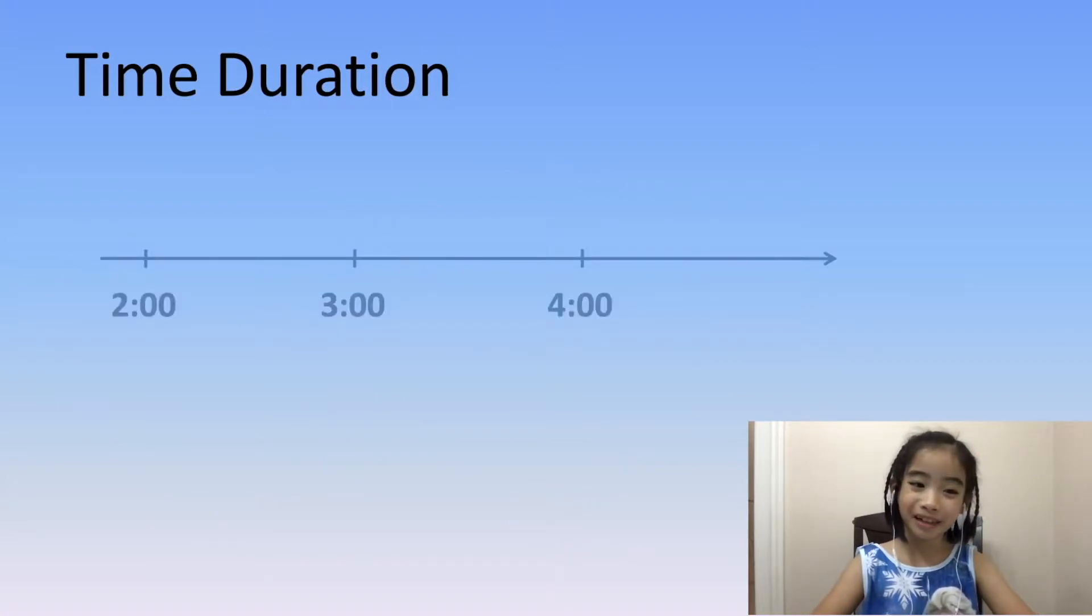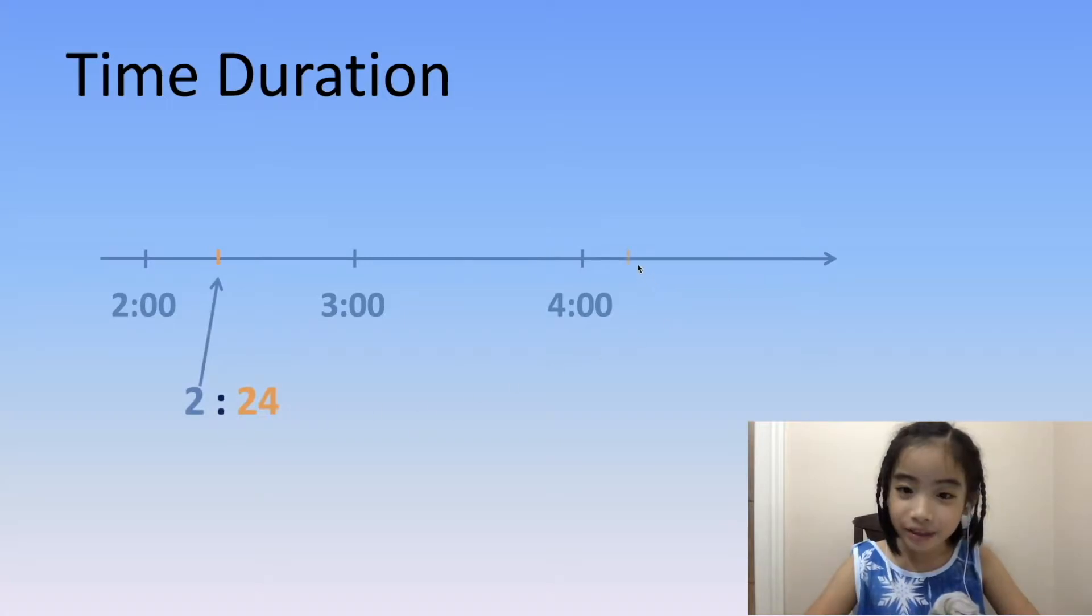Let's use the number line to help figure this out. This short yellow line here is 2:24, and the short yellow line here is 4:16. We need to figure out the time between the two short yellow lines.